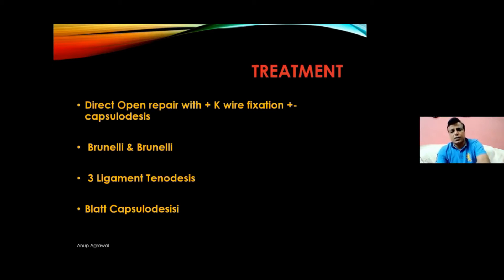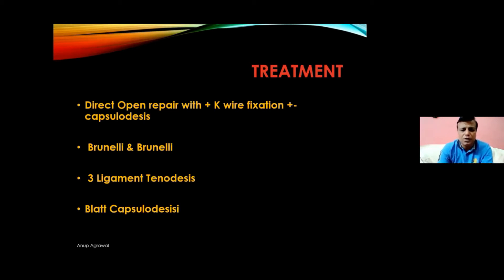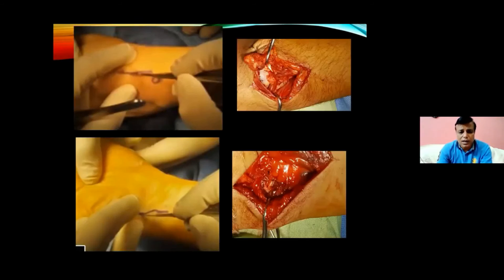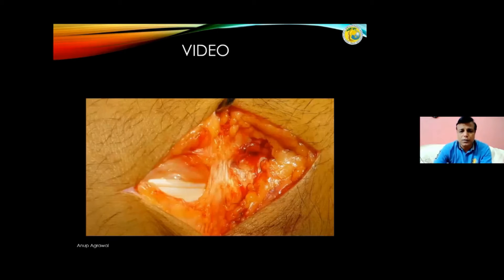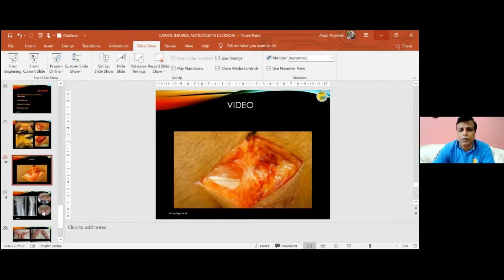For treatment, fresh injuries can be managed with direct open repair and K-wire fixation. For degenerative or late presentations, options include Brunelli and its various modifications, three-ligament tenodesis, or a volar capsulodesis. What I am going to show in this video is a modification of the Brunelli procedure.